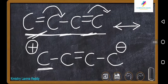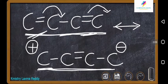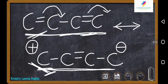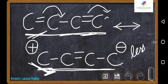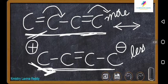The first resonance structure is more stable compared to the second. The reason is: in the second structure, one carbon has a plus charge, meaning it does not have an octet configuration. Any atom not having octet configuration makes the structure less stable. In the first structure, all carbon atoms have octet configuration, so it is more stable.